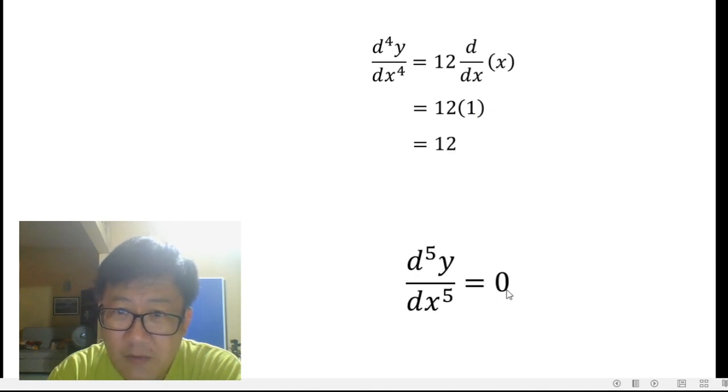When you differentiate a fifth time, you get a 0 because that is a constant, so you get a 0 here. So we end here. The non-zero derivatives would be, the last one would be 12.